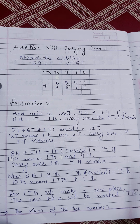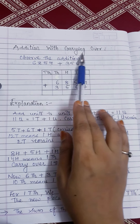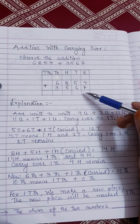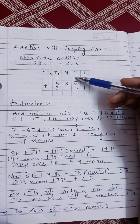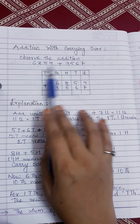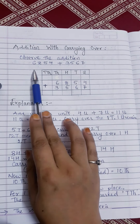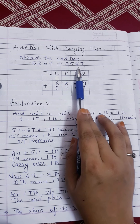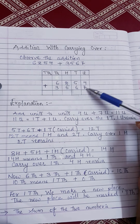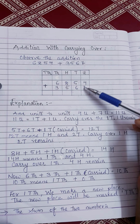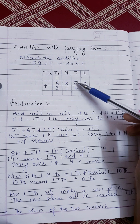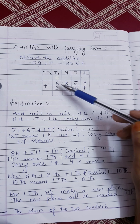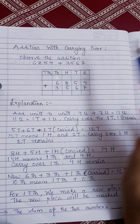Now another topic is addition with carrying over. Carrying over means if you get a two-digit result, you carry one number above. Observe the addition here: the number is six thousand eight hundred and fifty-four and another number is three thousand five hundred and sixty-seven. We write the unit number under the unit number, tens under tens, hundreds under hundreds, and thousands under thousands.